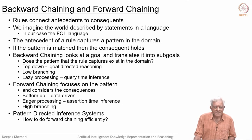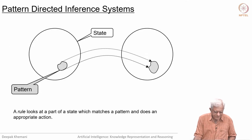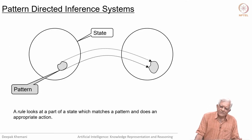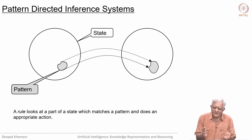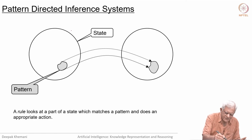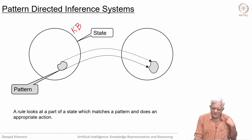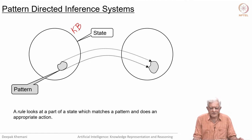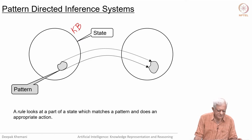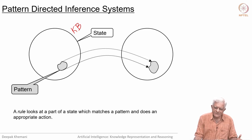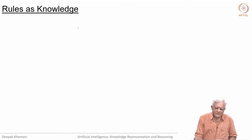The question we are going to address today is how to make forward chaining work efficiently. In a pattern-directed inference system, given some state—also called a knowledge base—a rule looks at a small subset of the knowledge base and does something. The simplest thing is to make an inference, but you can also trigger other actions, for example if you are controlling a robot. A rule looks at a part of a state which matches a pattern and does an appropriate action as described in the rule.